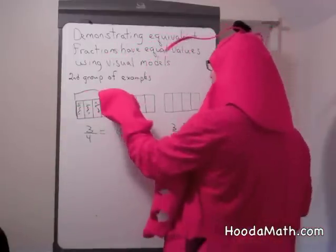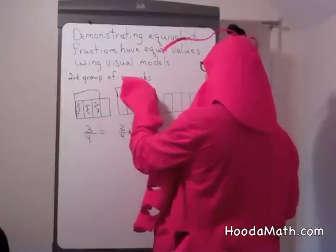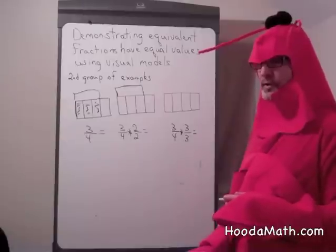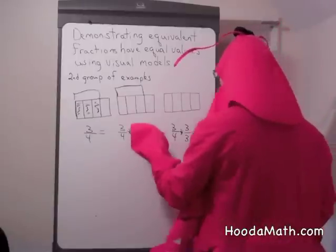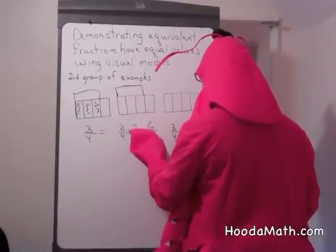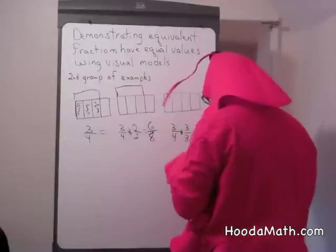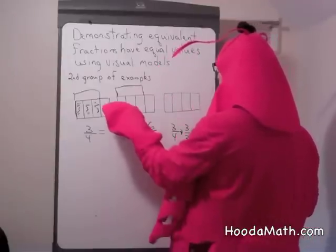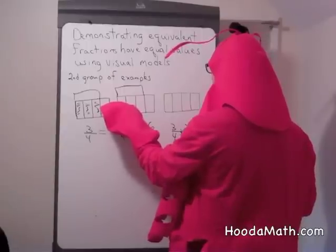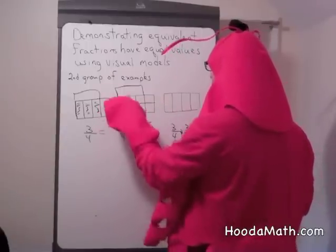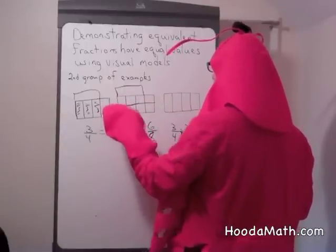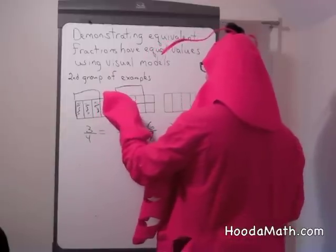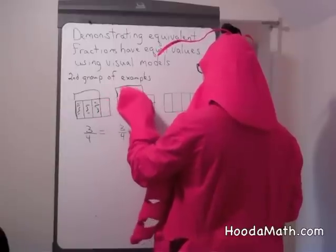3 fourths would be the same space here. But if we multiply it by a form of 1 — 2 over 2 — we get 6 eighths, meaning we have to divide each part in half. If we do that, now we have 8 pieces, and each one is equal to 1 eighth. And that gives us 1, 2, 3, 4, 5, 6.